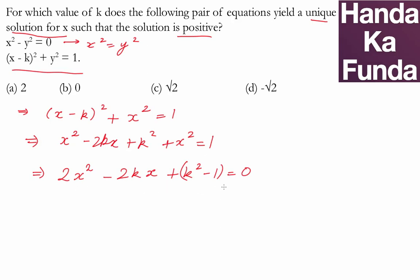Now, in this particular quadratic equation, for the solution to be unique, what should happen? b² should be equal to 4ac because only then b² - 4ac will be 0. The discriminant will be 0 and only then you will get a unique solution.